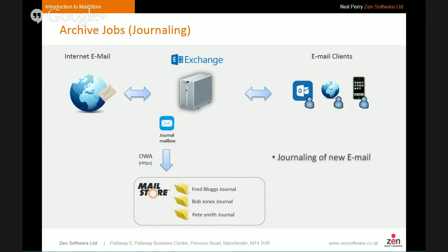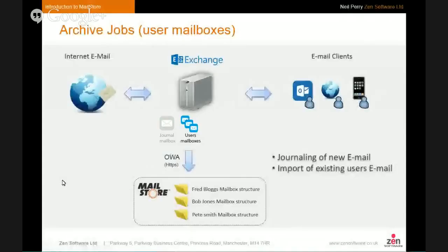But what about all the existing email users already have in their mailboxes, and how do we take control of that stored mail? This is where we set up a second archiving job, designed to go and collect users' mailboxes themselves. We log in as a user that has impersonation rights, and that account goes to Exchange and retrieves the contents of each user's mailbox in turn, storing them under the relevant user's archive. This job collects the full mailbox folder structure. It can also delete old messages if desired.